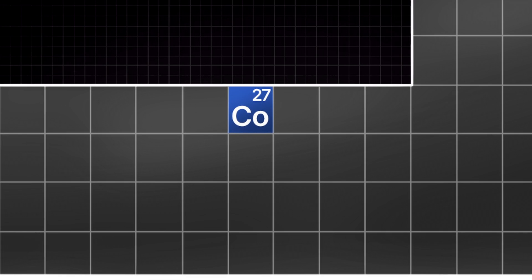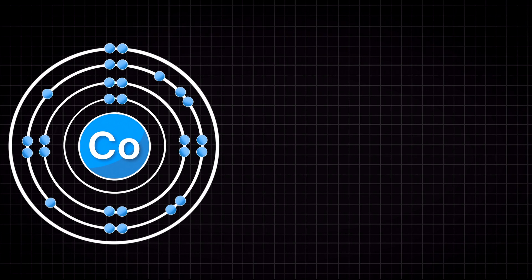Looking this up, we can see that cobalt is number 27 on the periodic table, meaning that in a neutral state, no positive or negative charge, our cobalt atom will have 27 protons in its nucleus and thus 27 electrons surrounding that nucleus.